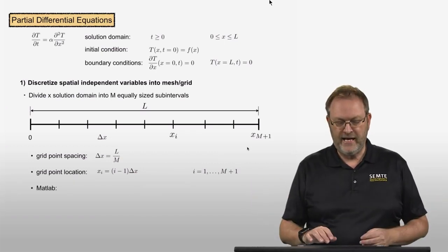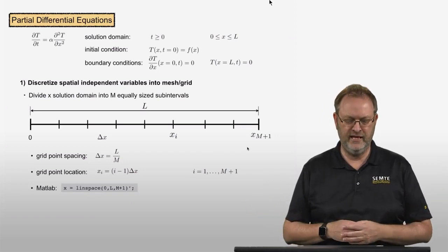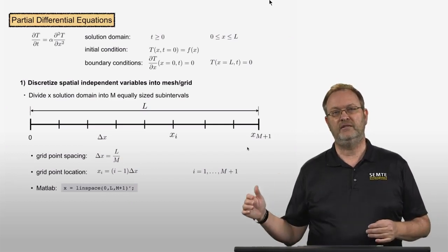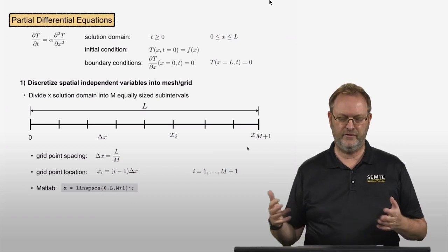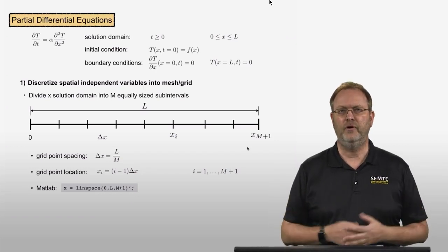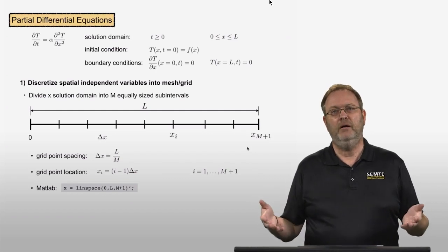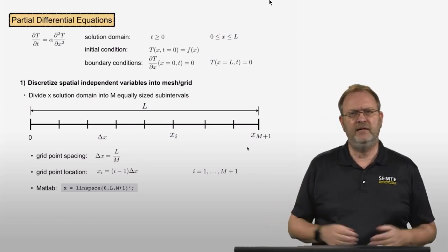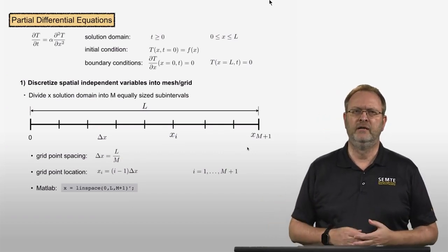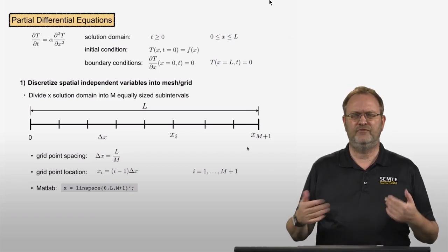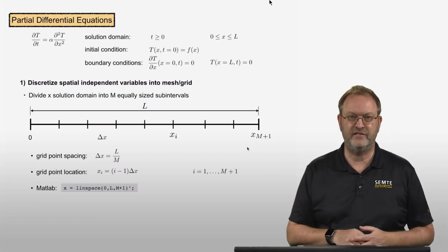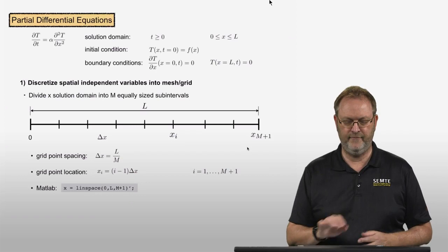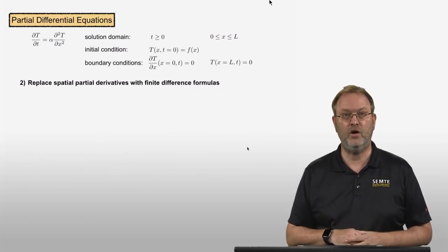In MATLAB, use the linspace command where the first argument is the starting coordinate, the last argument is the ending coordinate, and the third argument is the number of points. Because we have M subintervals, we have M plus 1 points. The linspace command returns a row vector, but I prefer column vectors, so add an apostrophe at the end to transpose it into a column vector. That's step one.